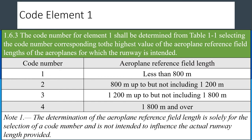If the code number is 2, it means the runway ranges between 800 meters but less than 1200 meters. If the aeroplane reference field length is between 1200 meters and 1800 meters, then the code number is 3. If the runway is longer than 1800 meters — whether 3000, 4000, 5000, or 6000 meters — that runway code number is 4.